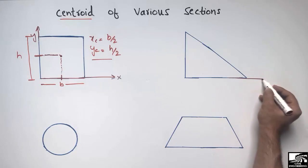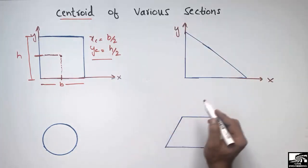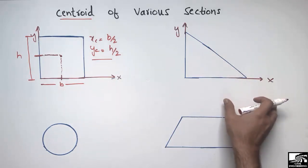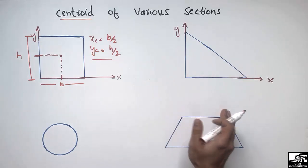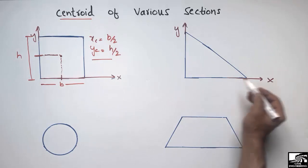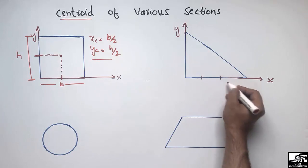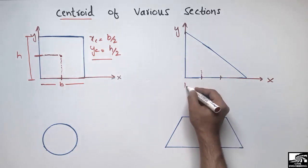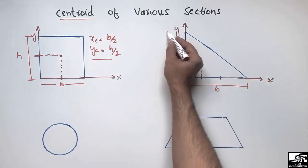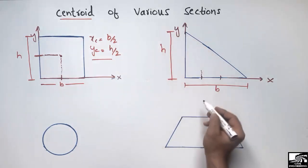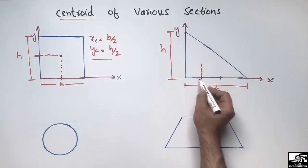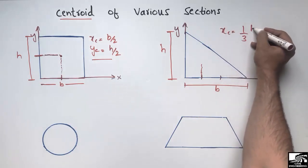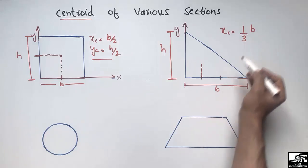Now let's find the centroid of the triangle. Again we draw the x-axis and y-axis. In the case of a triangle, it is different from the rectangle because the shape is different — the centroid depends entirely on the shape. If the width of the triangle is B, and I divide it into three equal parts, the centroid along the x-axis lies at one-third of B, i.e., B/3.